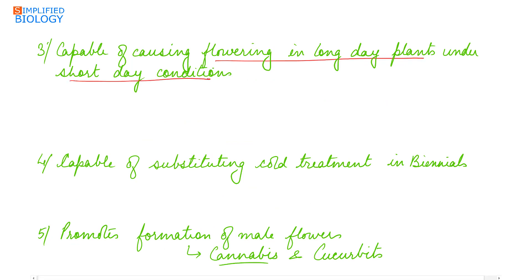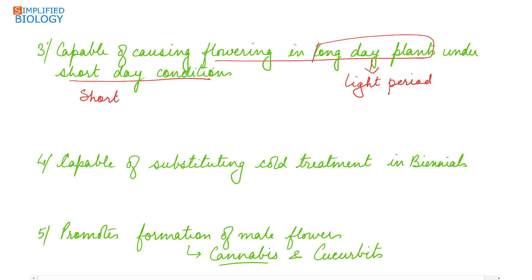Gibberellin is capable of causing flowering in long day plants under short day conditions. In a long day plant, it is the light period that is important for flowering, while in a short day plant, it is the dark period. A long day plant can be made to flower under short day conditions by providing gibberellin.